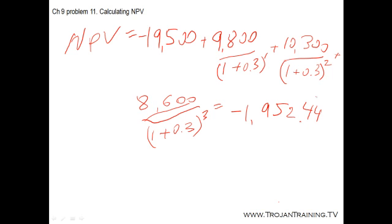The cash flow in year one is $9,800, with a frequency of 1. Hit enter. The cash flow in year two is $10,300, with a frequency of 1. The cash flow in year three is $8,600, with a frequency of 1. You're done with all your cash flow inputs. Hit enter, then put I as 0%, and calculate the net present value. It will give you $9,200.